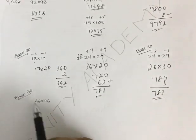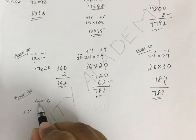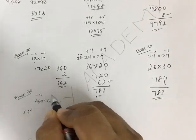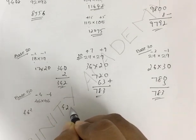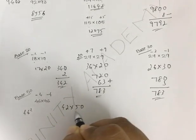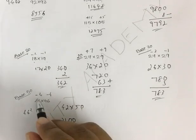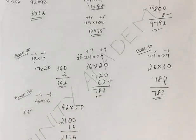Next, multiplication over base 50. Suppose you need to find 46 squared, which is 46 into 46. With 50 as the base, it is minus 4 and minus 4. 46 minus 4 is 42. Multiply with the base — we already discussed multiplying with 50: take half the number followed by two zeros. To that, add the product of minus 4 into minus 4, which is 16. So the answer is 2116.